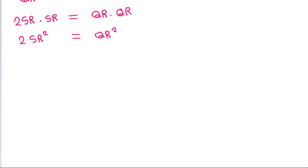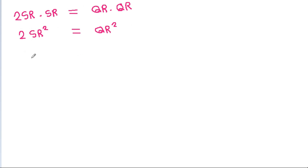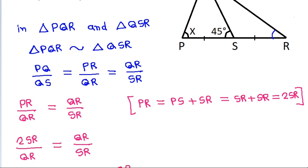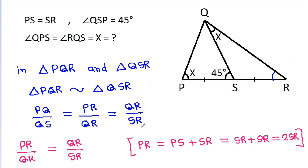Then QR by SR will be equal to root 2, since QR squared equals 2 times SR squared. And since PQ by QS equals QR by SR from the similarity, that means PQ by QS is also equal to root 2.